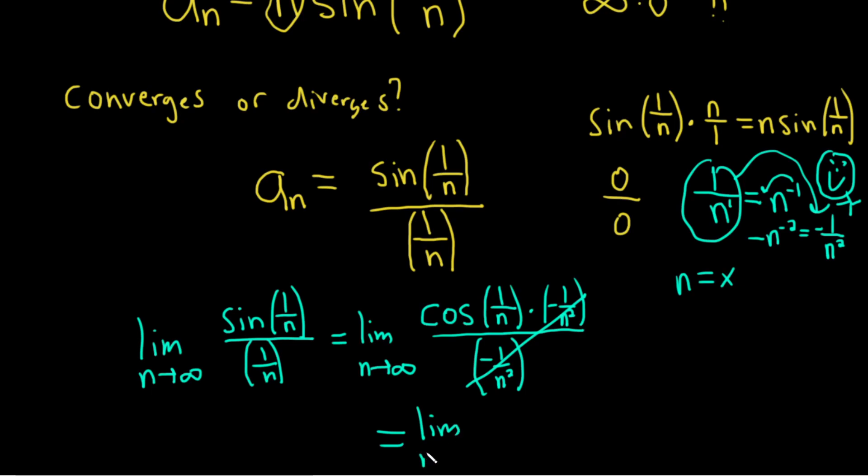So you have the limit as n goes to infinity. And then we're left with cosine of 1 over n. And now the limit is a little more clear, right? 1 over n approaches 0 as n approaches infinity. So this approaches the cosine of 0. Let's drop the limit sign, so it's equal to 1.